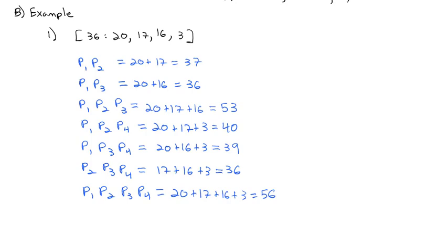We've identified all the winning coalitions; now we'll see which players are critical. In the first winning coalition of Player 1 and Player 2, Player 1 is critical because without Player 1, Player 2 cannot meet quota alone. Player 2 is also critical, because Player 1 can't reach quota alone either. So both players are critical in this case.